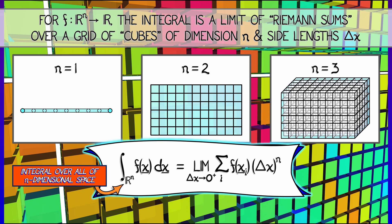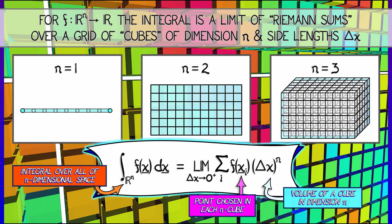I take the cube of side length delta x. I look at its volume in n dimensions, which is delta x to the n. Then I choose xi, a point in each cube, in the i-th such cube. I evaluate the function there,